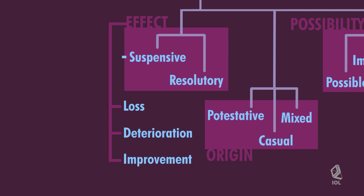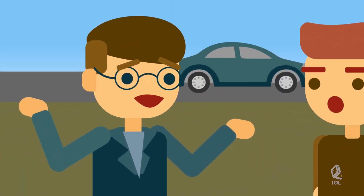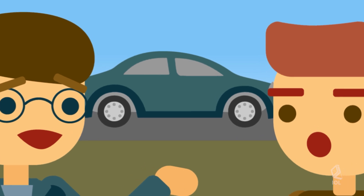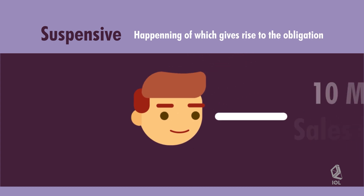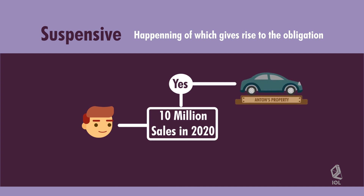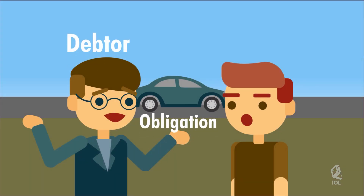Let's recall the example under an obligation subject to a suspensive condition. Antin shall give Henry a car with plate number ABCD14 if Henry will be able to reach sales of 10 million pesos for the year 2020. Upon fulfillment of the condition, Antin shall be considered as the debtor with the obligation to deliver the car to the creditor, Henry.